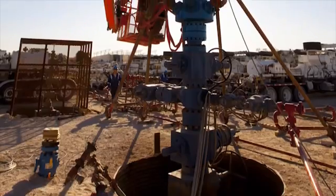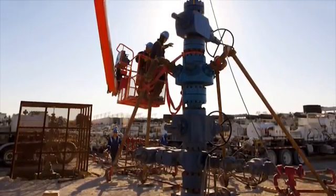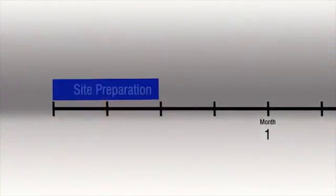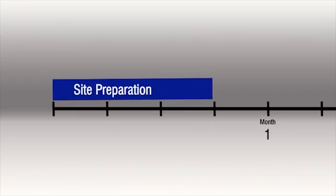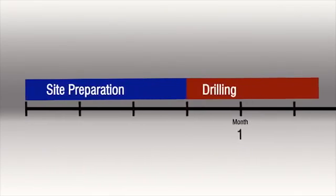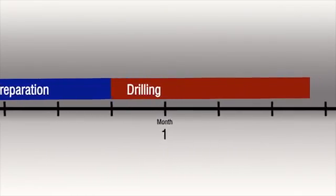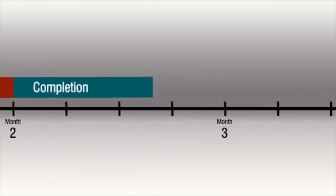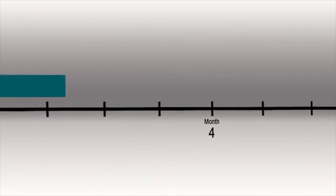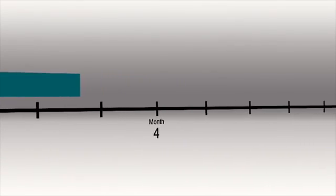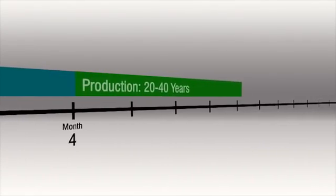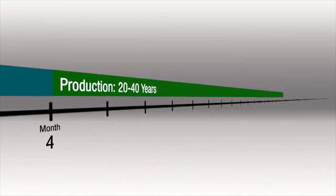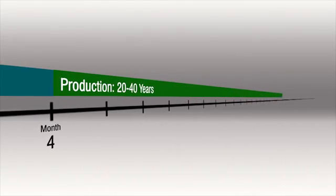The whole process of developing a well typically takes from three to five months: a few weeks to prepare the site, four to six weeks to drill the well, and then one to three months of completion activities, which includes one to seven days of stimulation. But this three to five month investment can result in a well that will produce oil or natural gas for 20 to 40 years or more.